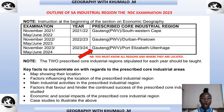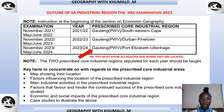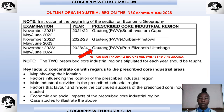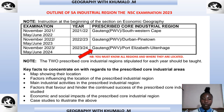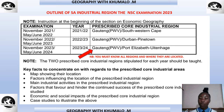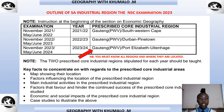This year we are only dealing with Gauteng PWV and the Port Elizabeth Winterhaven. You must know all the regions and where they are located. Key factors to concentrate on with regards to the prescribed core industrial areas include: